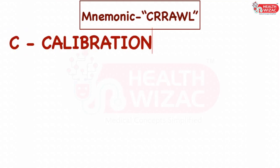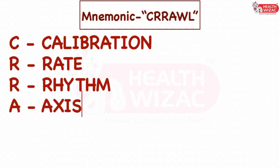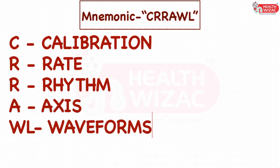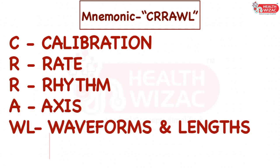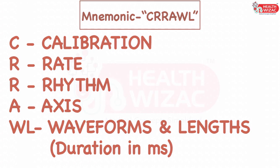In this, C stands for calibration, R stands for rate, second R stands for rhythm, A stands for axis, and WN stands for waveform and the respective lengths, that is duration in milliseconds.